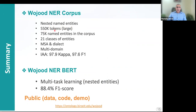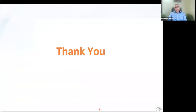To sum up, we presented in this paper a corpus and a model. The corpus supports nested entities, is large and rich in terms of number of entities and entity classes, supports MSA and dialect and multiple domains, and has high inter-annotator agreement. The model achieves 88.4 percent F1 score. The code, data, and demo are all available on this link. Thank you very much for listening, and I am happy to take questions.